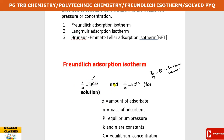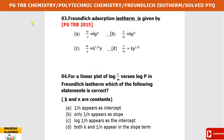Next question: the Freundlich adsorption isotherm is given by - this is a PGTRB 2015 question. The answer is x by m equals the surface coverage. So the answer is a and b, where a equals m by x and b equals k into p power m. Your answer is d.